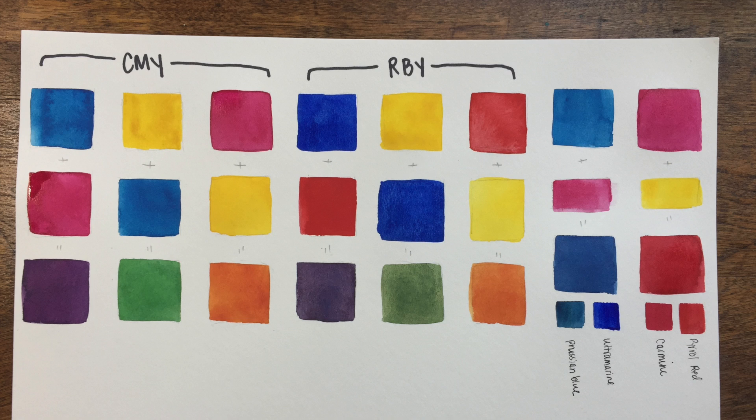Then you can add in a warm red like a Pyrrole red and your warm blue like an Ultramarine. I would actually split up your yellows—use maybe a lemon yellow and a Hansa yellow deep or a New Gamboge so you have a cool yellow and a warm yellow.